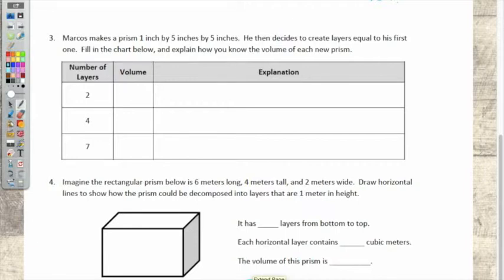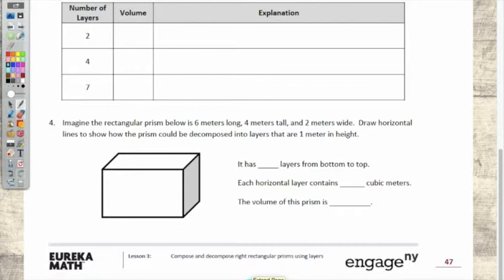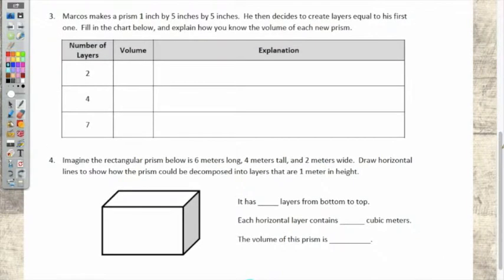Marcos makes a prism 1 inch by 5 inches by 5 inches. Now, here's what I want to show you. This could be technically length times width times height. So all we have to do is multiply those three together. Okay. And we will get the volume of Marcos' prism. Okay. He then decides to create layers equal to his first one. Fill in the chart below and explain how you know the volume of each new prism.